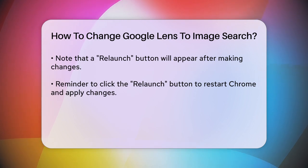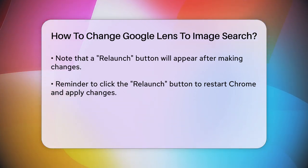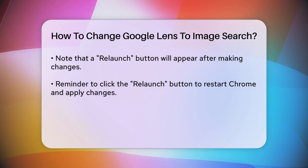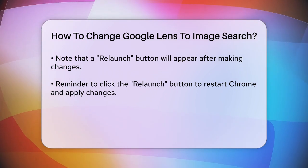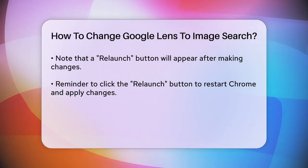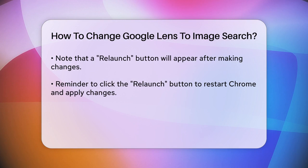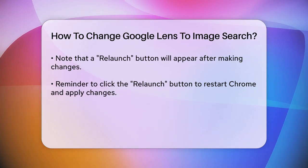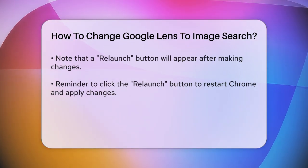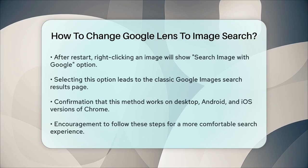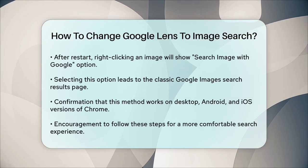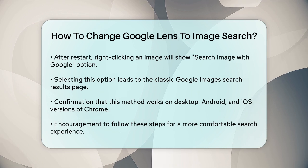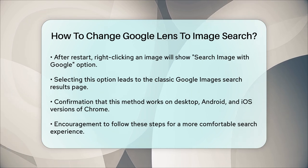Once Chrome restarts, you can right-click on any image and you'll see the option 'Search Image with Google' instead of 'Search Image with Google Lens.' Selecting this will take you to the classic Google Images search results page, where you can find similar images and other related content.